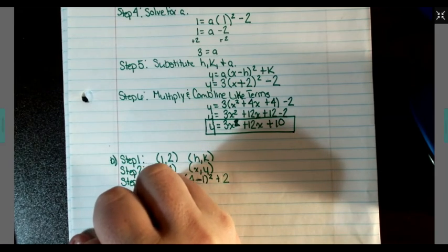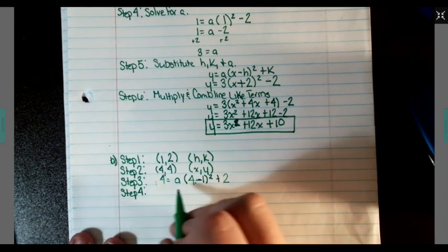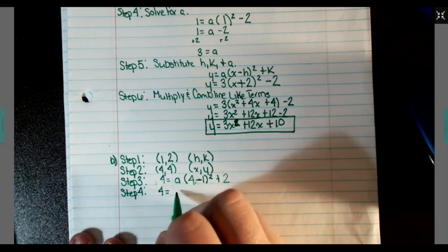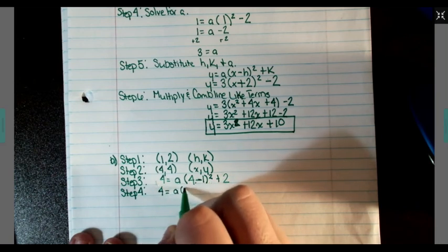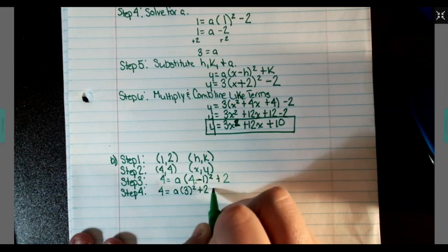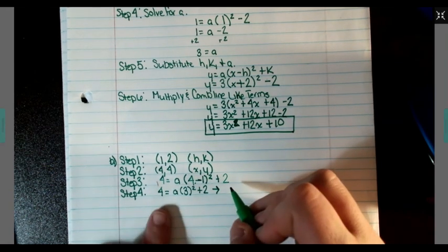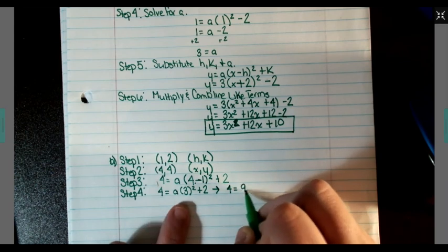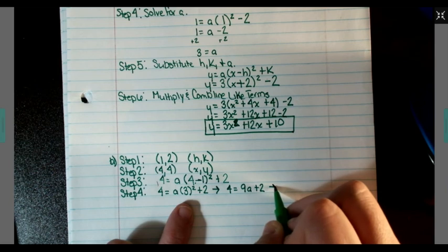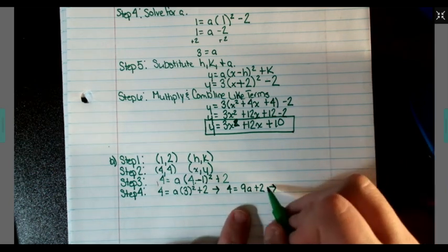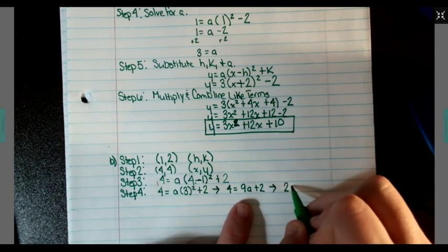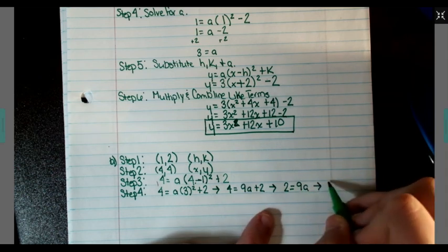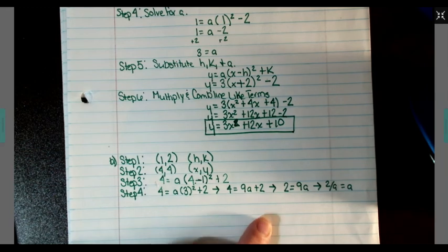Step 4 says solve for A. So we've got 4 equals A times 3 squared plus 2. That's going to be 4 equals 9 times A plus 2. That's going to be a subtraction. So it's going to be 2 equals 9A. So that's going to be 2 over 9 equals A.